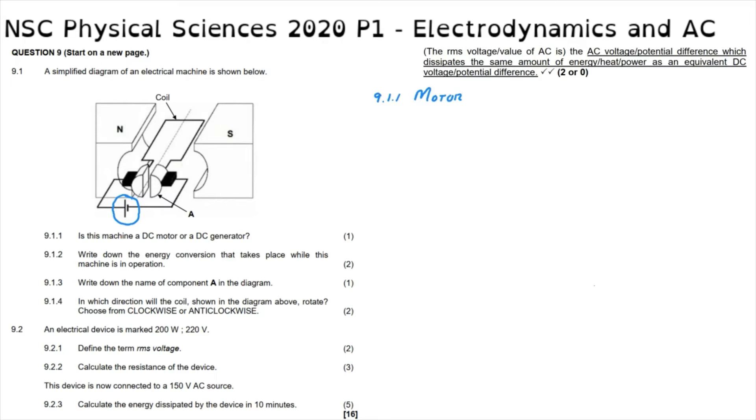Question 9.1.2: write down the energy conversion that takes place within this machine or while this machine is in operation. The correct answer there, as we've said, because this is a motor, it converts electrical energy, which it gets from that battery, into mechanical energy. Mechanical energy being the energy of motion. So the conversion that takes place inside a motor is the conversion from electrical to mechanical energy.